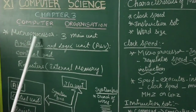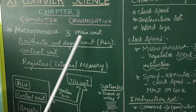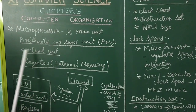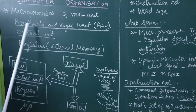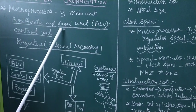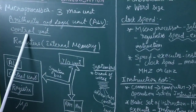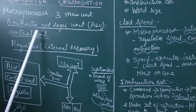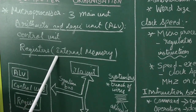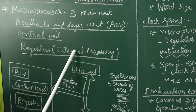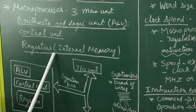The microprocessor consists of three main units, as we have seen in the first lesson. The CPU consists of: the Arithmetic and Logic Unit, which performs arithmetic and logical operations; the Control Unit, which controls the overall operations of the computer; and Registers, which are internal CPU memory.